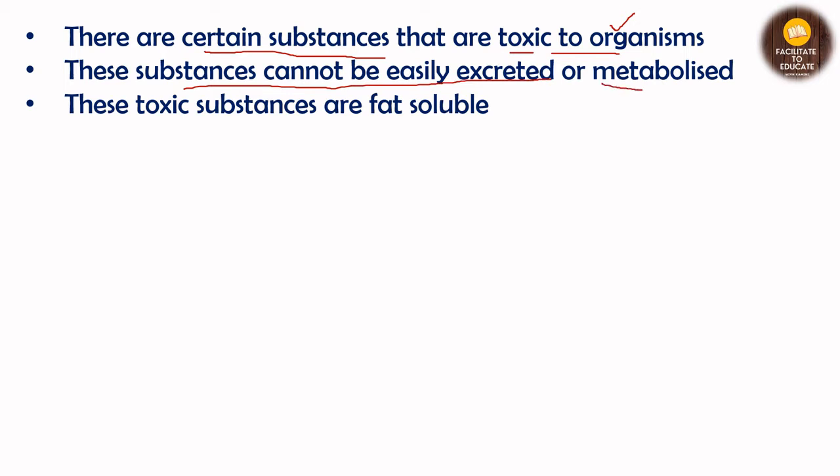These toxic substances cannot be easily excreted or metabolized. They are not getting excreted out of the body or being metabolized and used by it, so they accumulate. Also, these toxic substances are fat-soluble. If they were water-soluble, they would be easily excreted out through processes like filtration done by the kidneys. But because they are fat-soluble, they do not get excreted or metabolized.